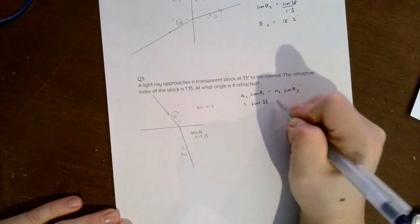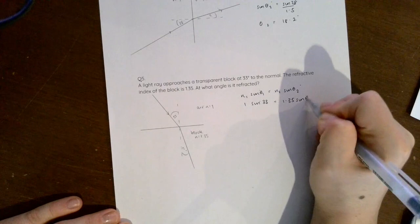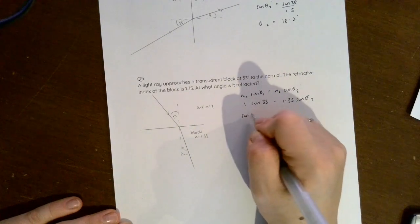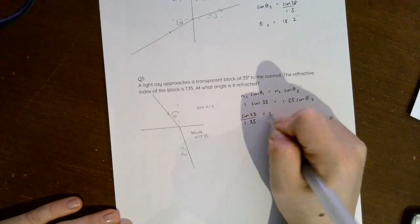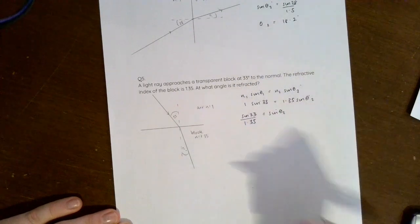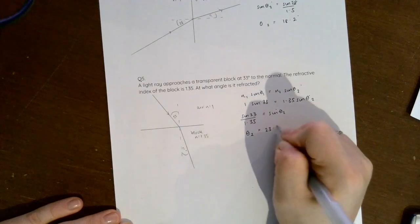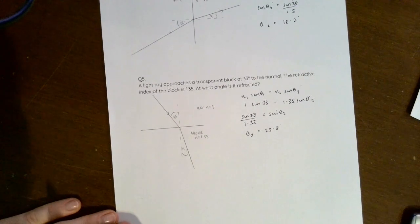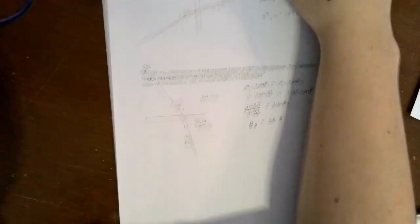So sin 33 over 1.35 equals sin θ₂, and I can work out that θ₂ is 23.8 degrees with some rounding. So hopefully by now you are happy with our Snell's Law equation.